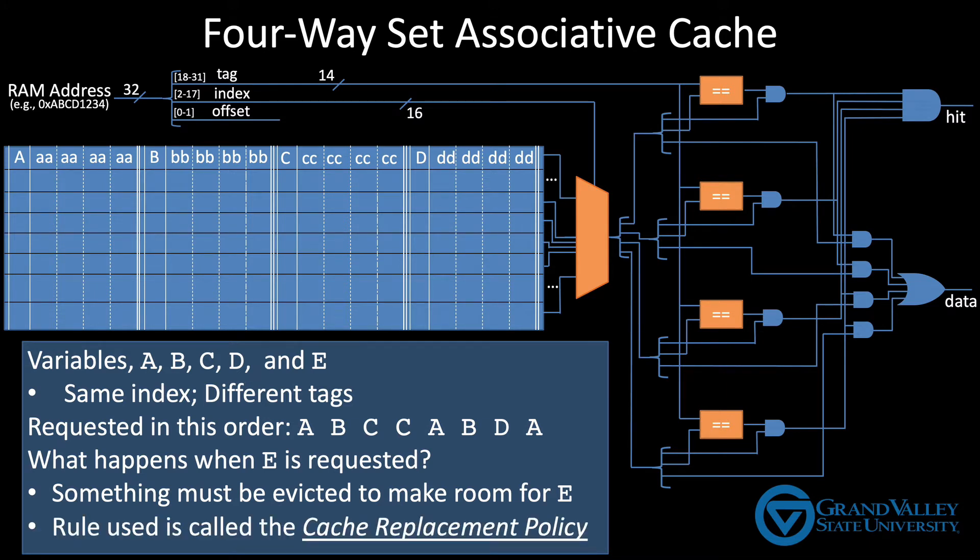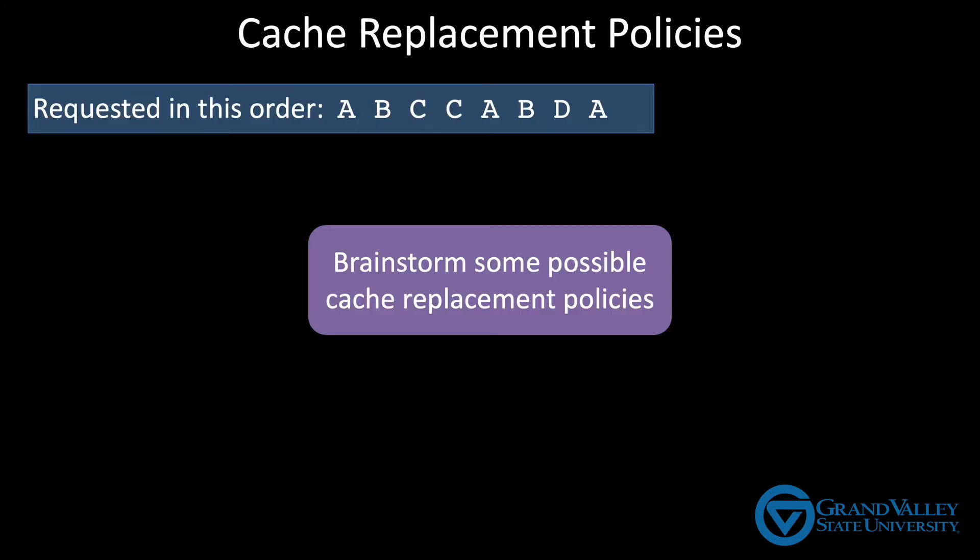So take a minute and brainstorm some possible cache replacement policies — think of some different algorithms you could use to decide which of A, B, C, or D should be evicted.